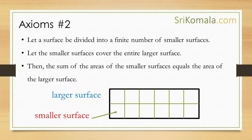Axiom number 2: firstly, let a surface be divided into a finite number of smaller, non-overlapping surfaces. Secondly, let the smaller surfaces cover the entire larger surface. Then, the sum of the areas of the smaller surfaces equals the area of the larger surface. This can be confirmed from the figure shown in this slide.